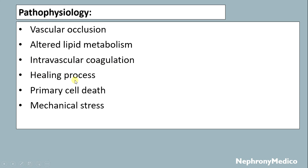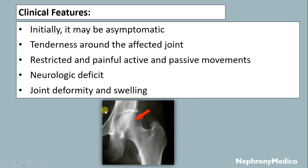The pathophysiology of avascular necrosis involves vascular occlusion, altered lipid metabolism, intravascular coagulation, impaired healing process, primary cell death, and mechanical stress.